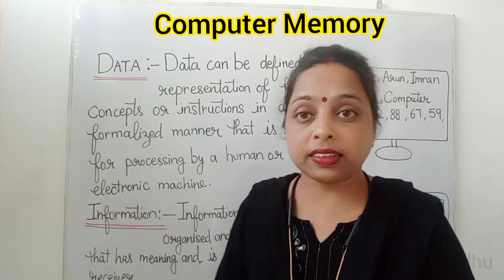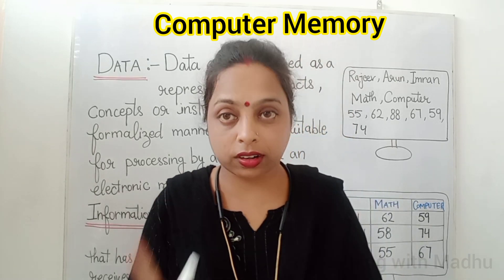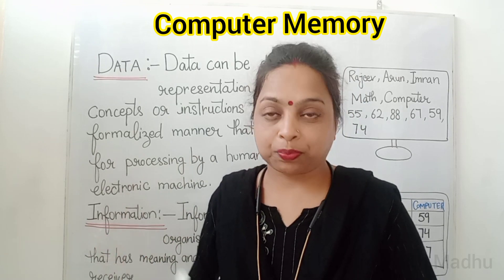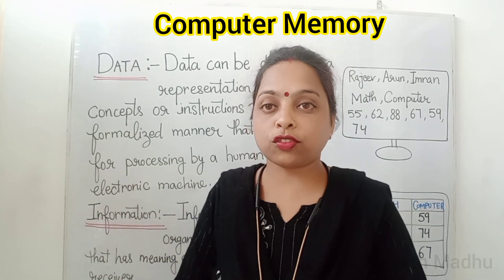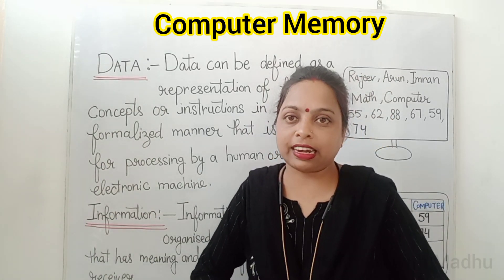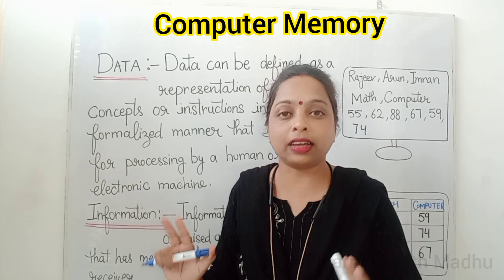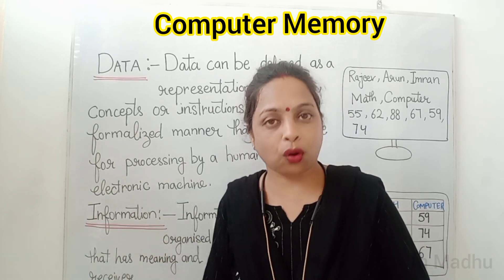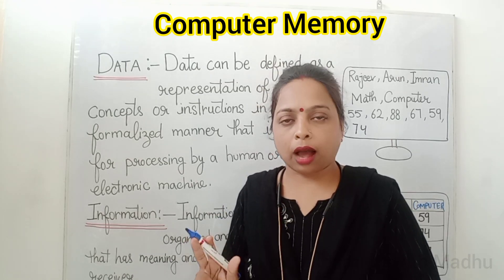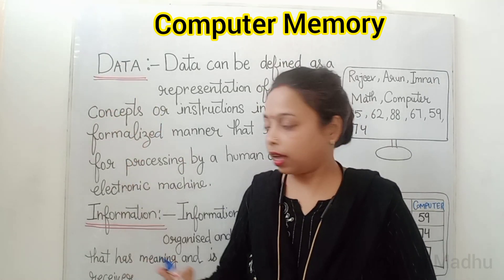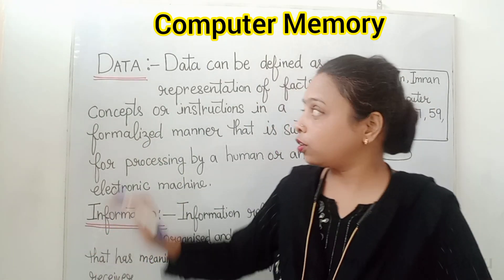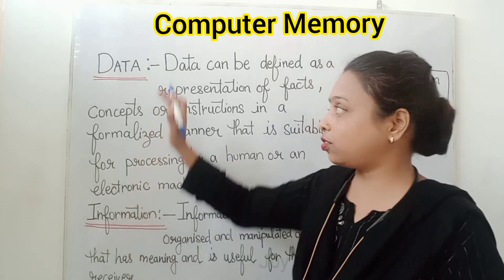In this chapter, Computer Memory, you have to understand two words: Data and Information. First, look at this word — D-A-T-A. Many students mispronounce it as 'data' — that is wrong. The correct pronunciation is 'data', not 'data'. And the second word is information. You have to be aware about these two words.